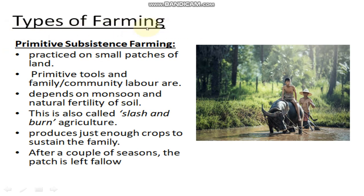Now let's move to the types of farming. First, we have Primitive Subsistence Farming. This is practiced in areas where tribal people live, in forested regions. It is done on small patches of land using primitive, hand-operated tools. Family members work as labor here. This farming depends on monsoon and the natural fertility of the soil.